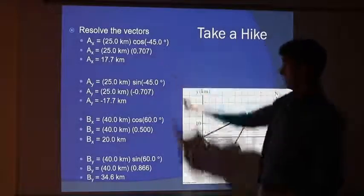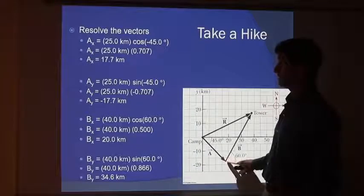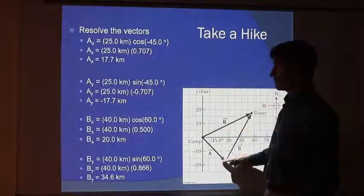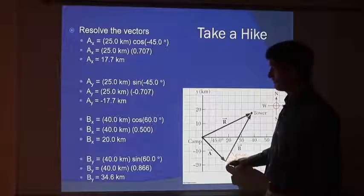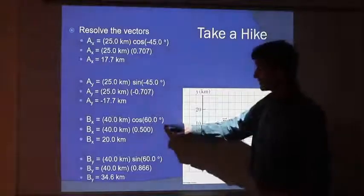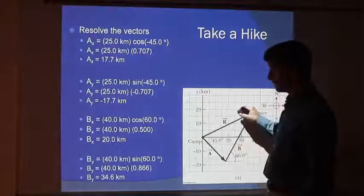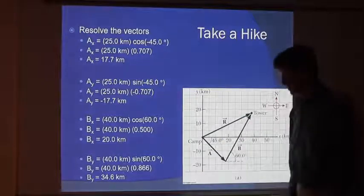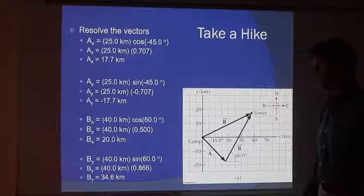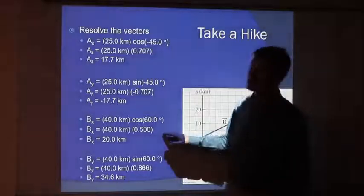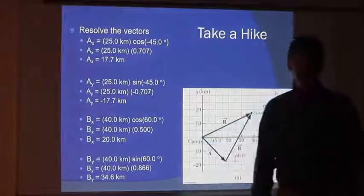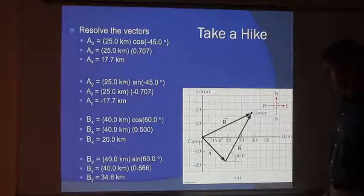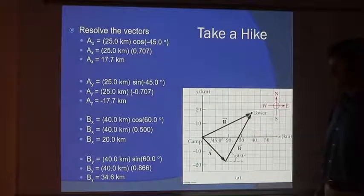Here's Ax, I go 17.7 kilometers east. Here's Ay, I go 17.7 kilometers south. Here's Bx, I go 20 kilometers east. Here's By, I go 34.6 kilometers north, okay? And that gives me my result.